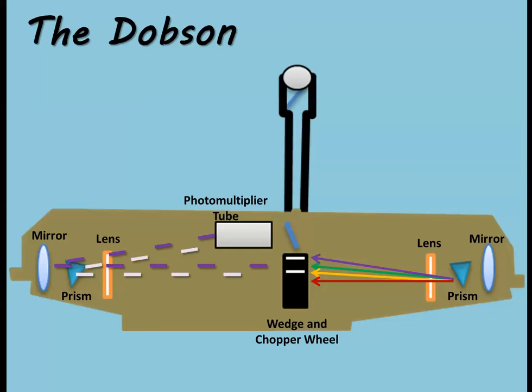After going through another series of lenses, prisms, and mirrors, the segmented wavelengths are sent into a photomultiplier tube, which measures the difference between the wavelengths.